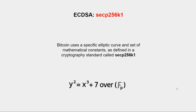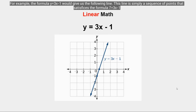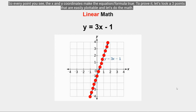Before we get into all of that, we'll brush up on our grade school algebra lessons of plotting lines on a grid using linear math over a simple x and y axis, which is much more simple than elliptic curve math. For example, the formula y = 3x − 1 would give us a line. This line is simply a sequence of points that satisfies the formula y = 3x − 1, so every point's x and y coordinates make the equation true.